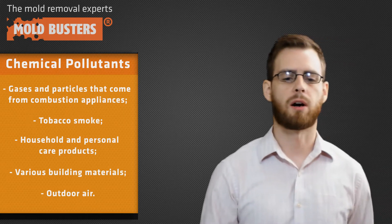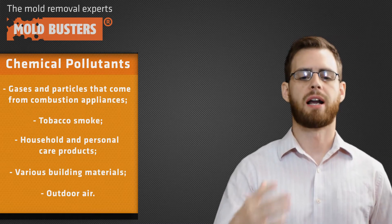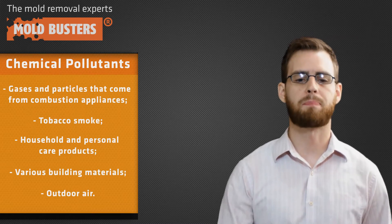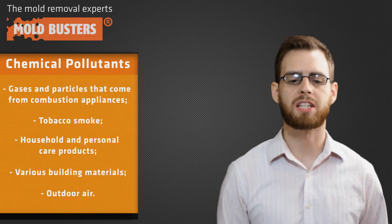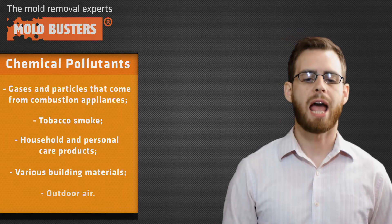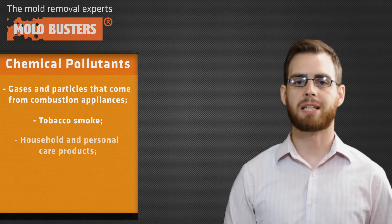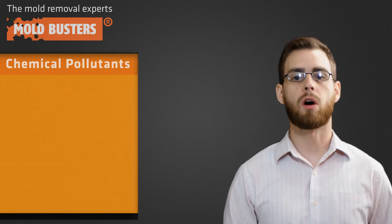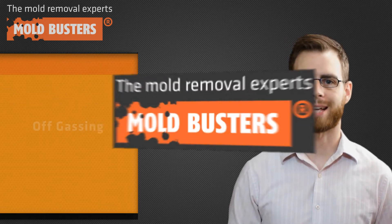Other pollutants in our home can come from furniture, cabinets, building materials, paint, wallpaper, cleaning products, glues, and some cosmetics, because they emit gases into the indoor air. We call this process off-gassing.